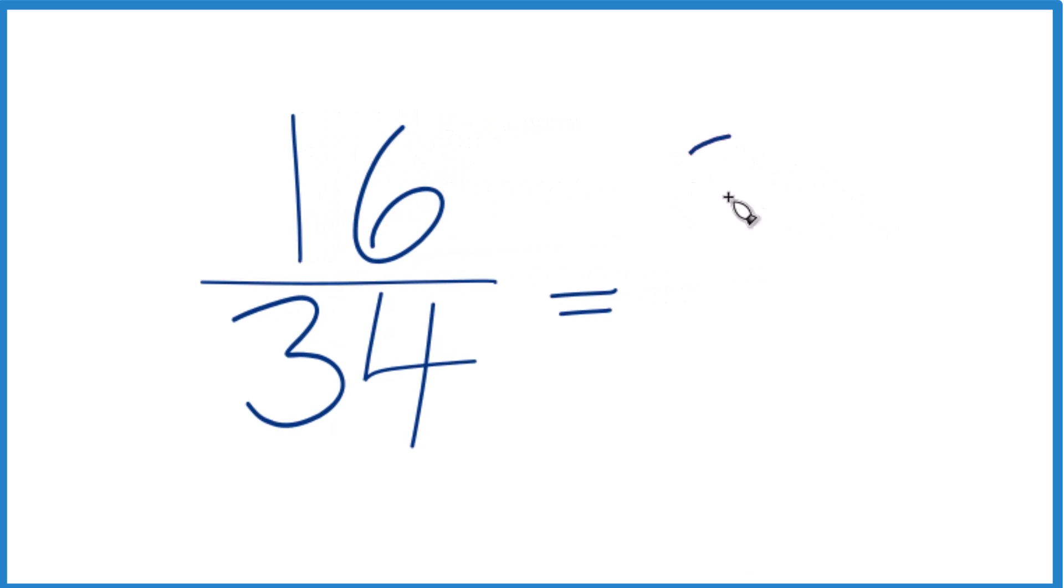16 divided by two, that's eight. 34 divided by two, that's 17. And actually, I can't simplify this any further. So the greatest common factor is two.